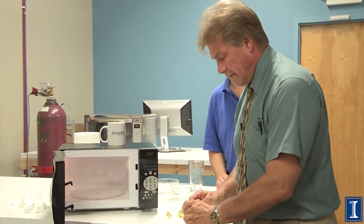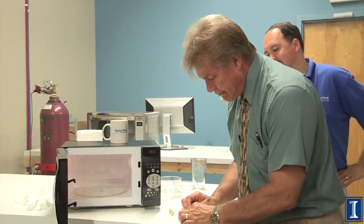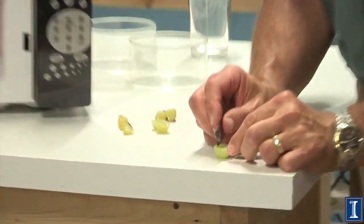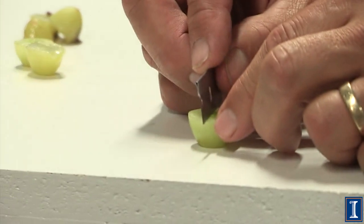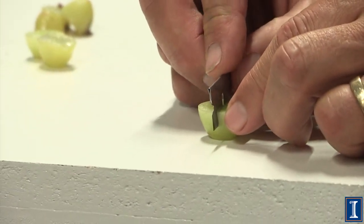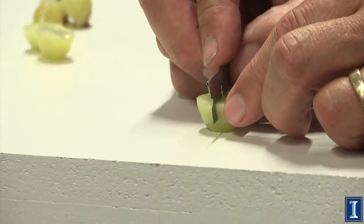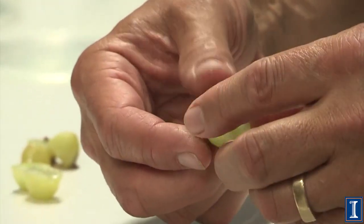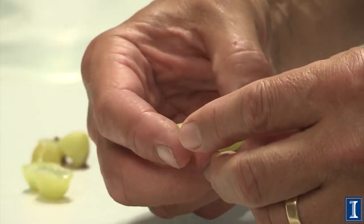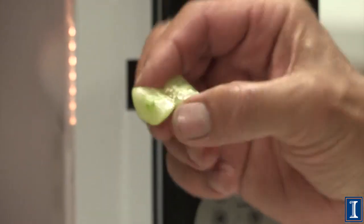You take your grape, cut it in half. You have to eat the half - yummy grape. And then we take this part of the grape but don't slice it all the way through.